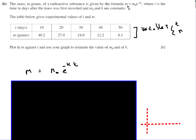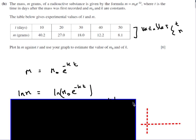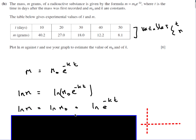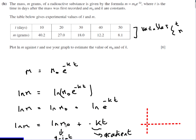We use the same method as before. Taking ln of both sides: ln m equals ln(m₀ e^(−kt)), which splits using the laws of logs into ln m₀ plus ln(e^(−kt)). Since ln and e are inverse functions they cancel out, leaving just minus kt. So we end up with ln m equals ln m₀ plus (minus kt).